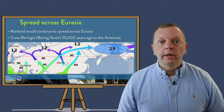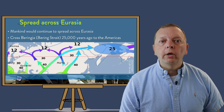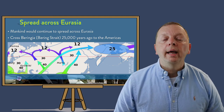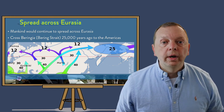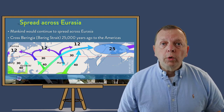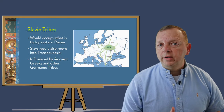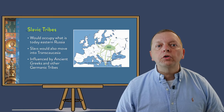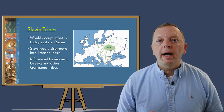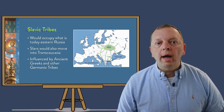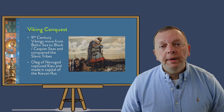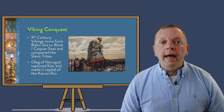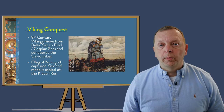For the next 40,000 years, humans would continue to migrate across Eurasia, including those who would go across the Bering Strait into what is today the Americas. The region around Transcaucasia and what is now Eastern Russia would become home to a series of nomadic Slavic tribes, who would later be influenced by the ancient Greeks and other Germanic tribes such as the Goths. But it would be the Vikings that would set into motion the events that created the Russia of today and its former republics.